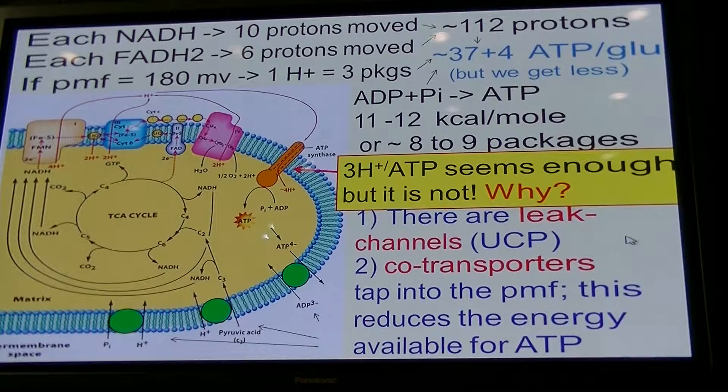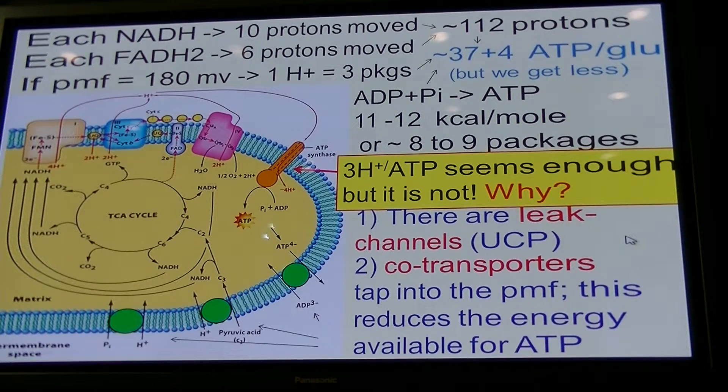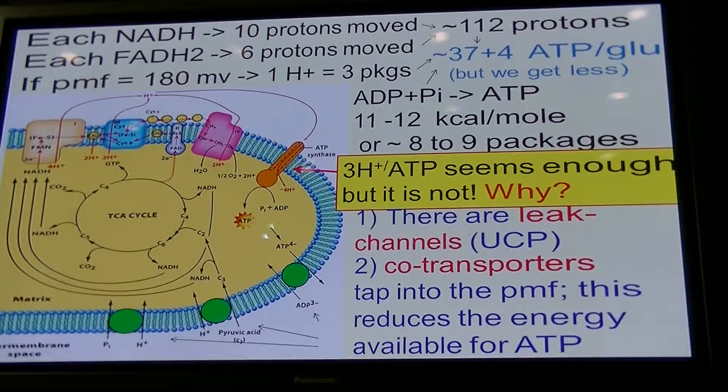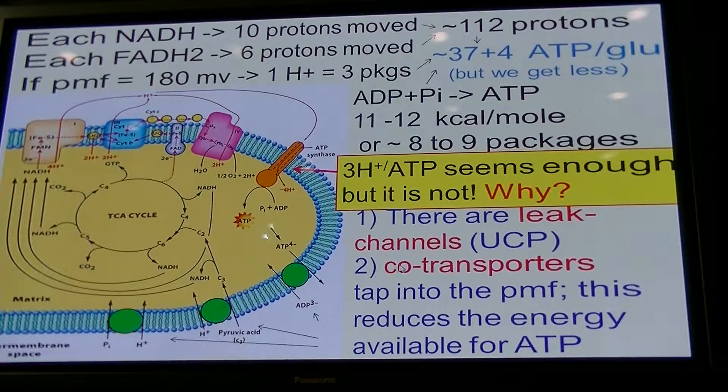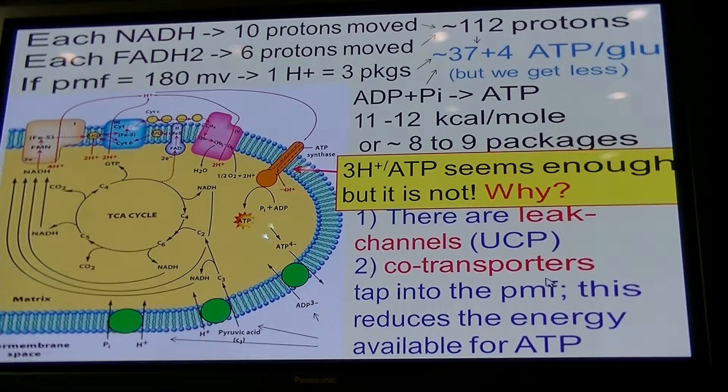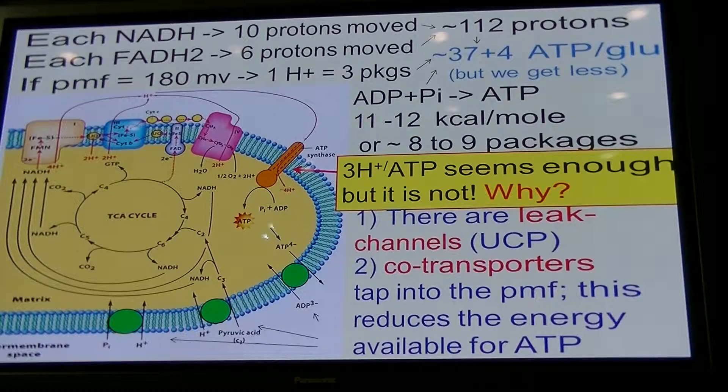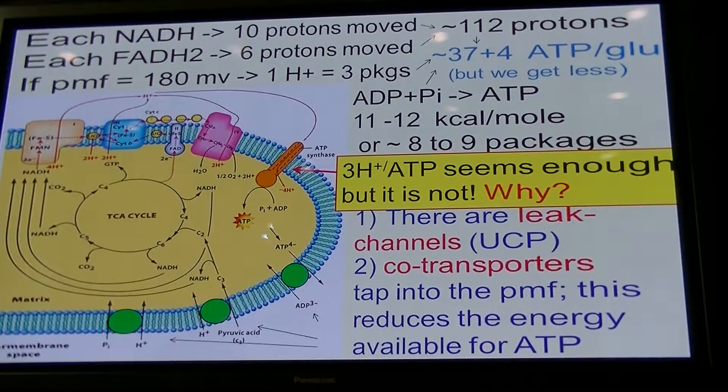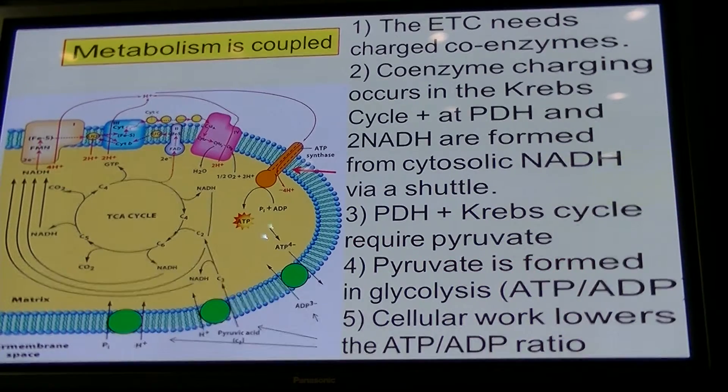So this is why we don't get to the 36 ATP, or not even the 41 ATP, but you could theoretically get according to my rough calculation. Leak channels and the needs to drive co-transport are reasons why ATP synthesis is not what you predict if you just look at how steep the membrane potential you have.